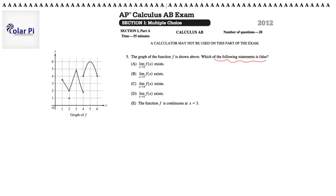So pay attention. We need to know which one is false. Option A: The limit as x goes to 2 of f(x) exists. We look. This is x equals 2. Therefore, the limit as x goes to 2, since the left limit and the right limit agree, does in fact exist.